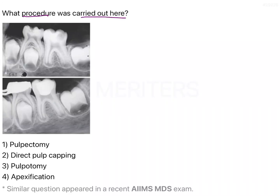What procedure was carried out here? In this question we have been given two radiographs — one is a pre-op radiograph and one is a post-op radiograph. On the basis of these we have to identify the procedure that was carried out.